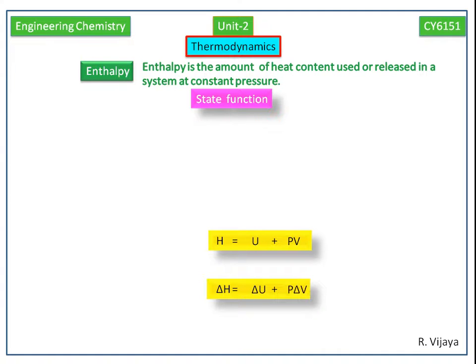At constant pressure, heat flow for the process is equal to the change in enthalpy. That is, delta H is equal to Q.